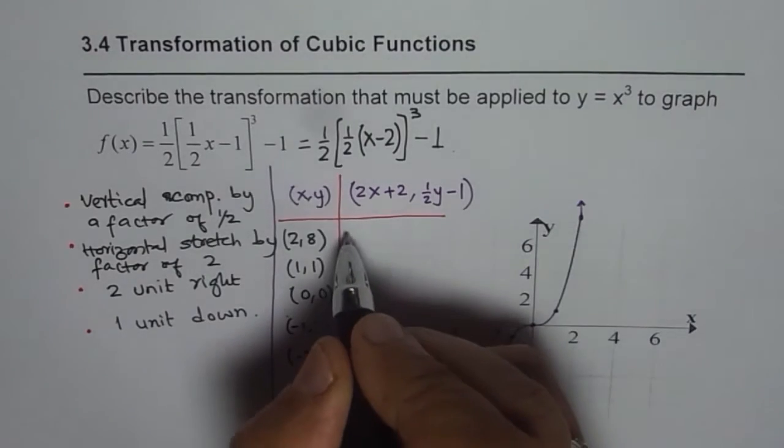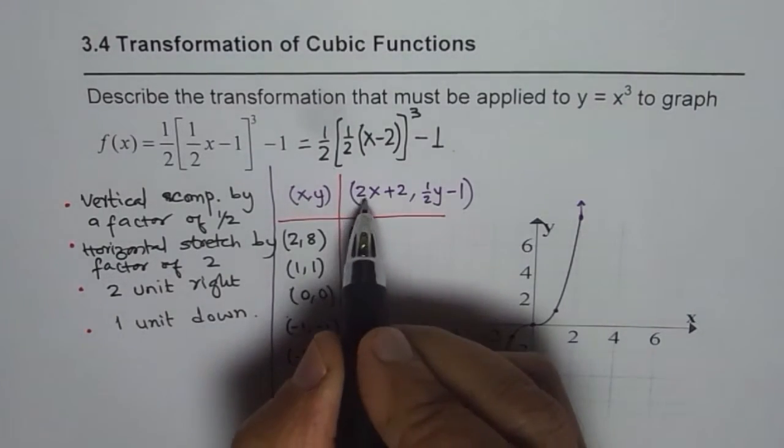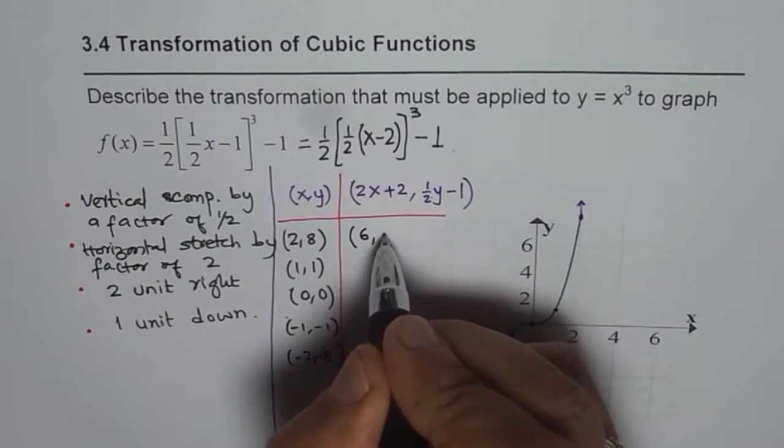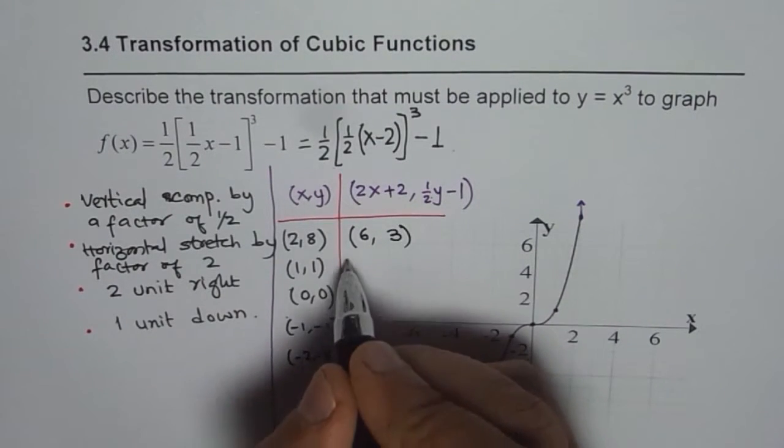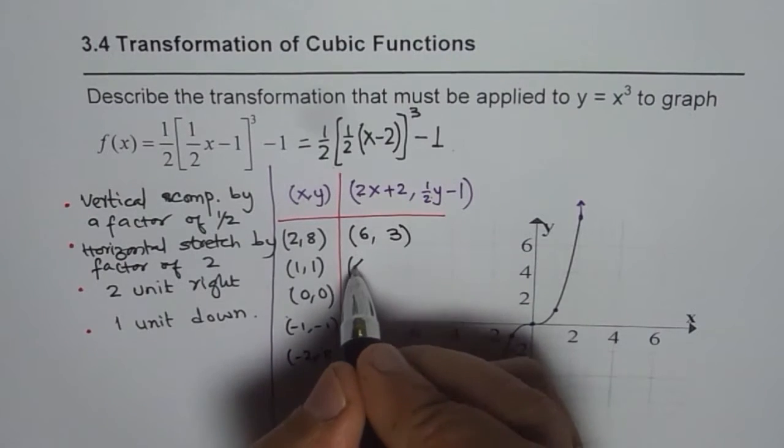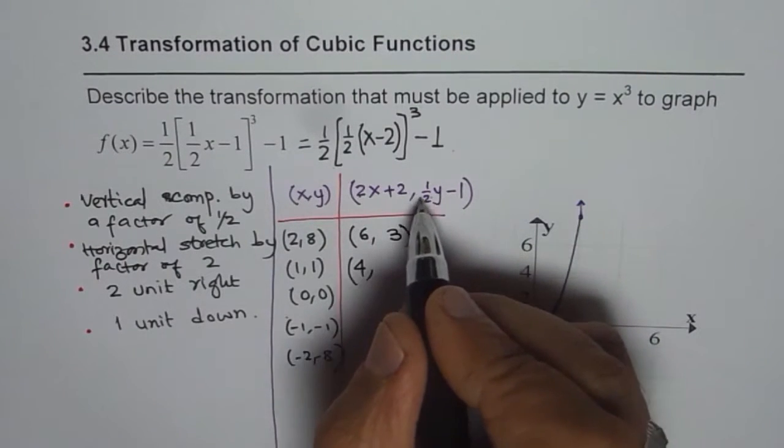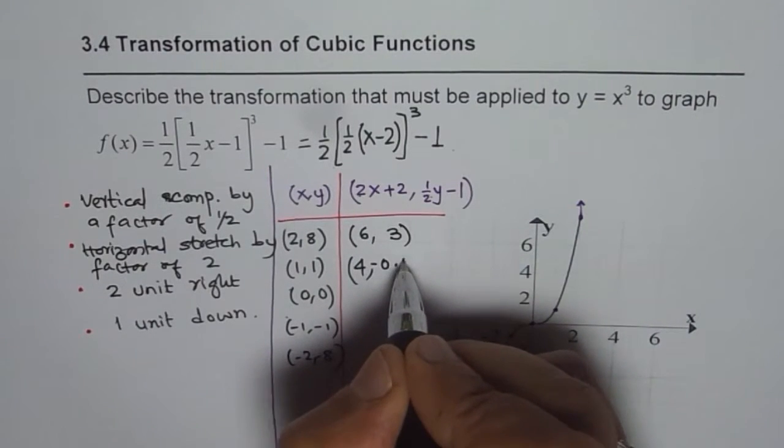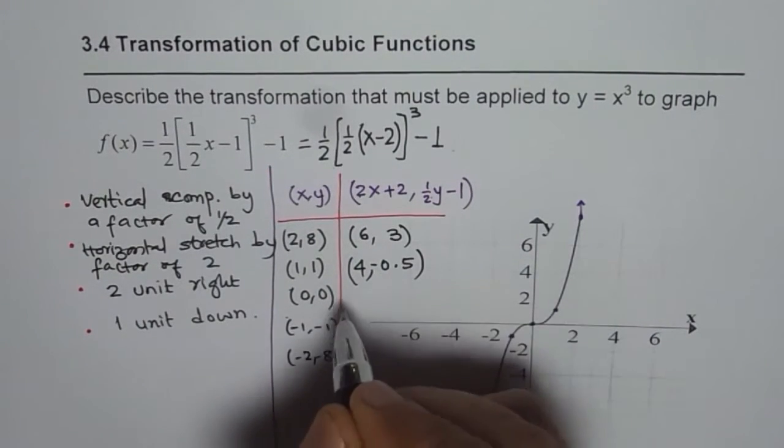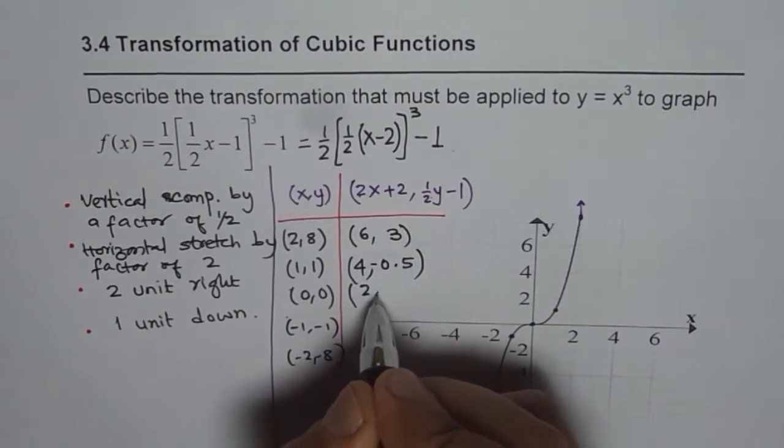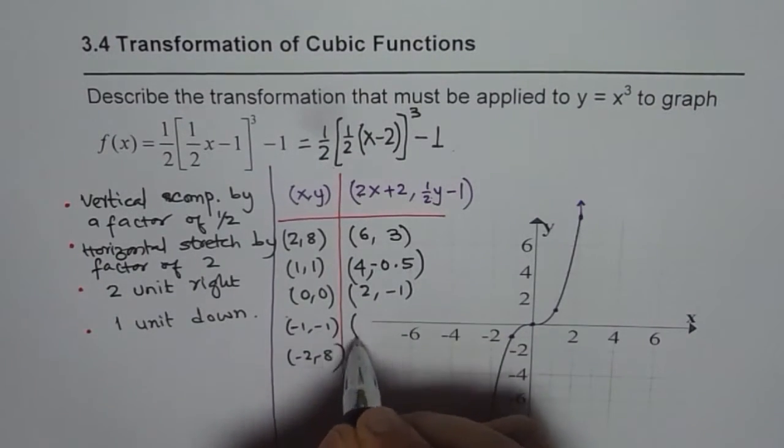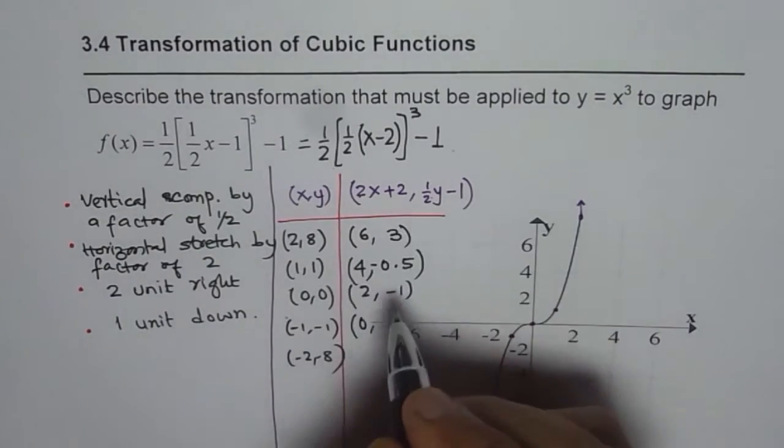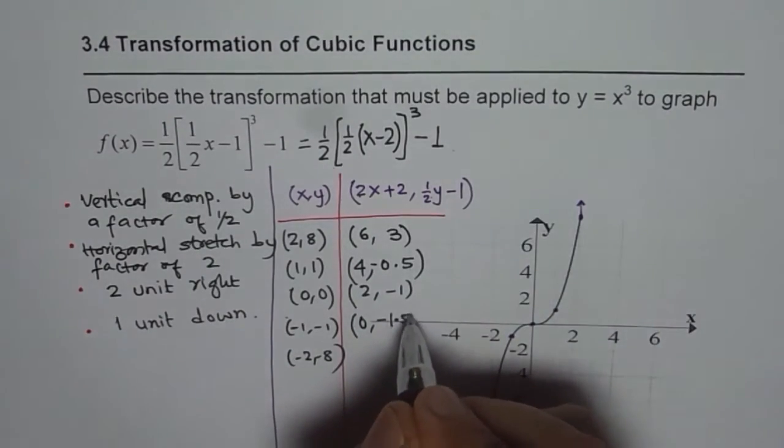Now 2 times 2, let us write down their image. 2 times 2 is 4, 4 plus 2 is 6. Half of 8 is 4, 4 minus 1 is 3. 1, 2 plus 2 is 4, so it is 0.5 with a minus sign. And here, 0 will give us 2 and minus 1. Minus 1 means it will give you 0. Minus 1 means minus 0.5, that is minus 1.5.